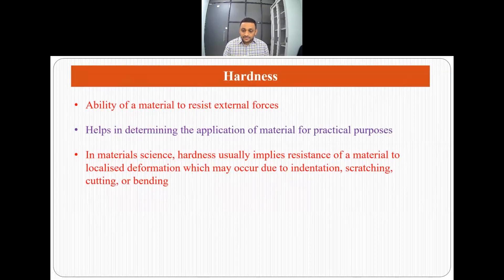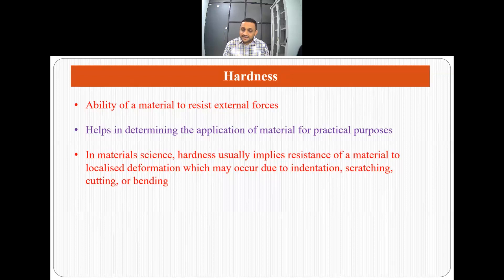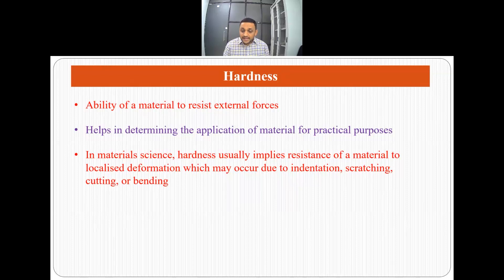The first question which comes to mind is: what is hardness? Hardness is the ability of a material to resist external forces. If a material is subjected to any kind of external force, it is the tendency of that material to resist that force — and that ability is what we call hardness. It helps us in determining the application of a material for practical purposes, so we can figure out where we can use a particular material based on its hardness measurement. When we talk about material science, we usually imply hardness as the resistance of a material to localized deformation.